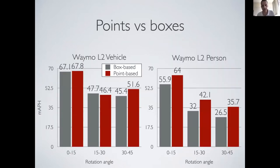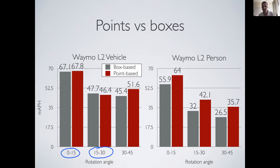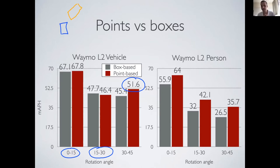In general, this works quite well, especially for objects that don't fit nicely into individual boxes. Comparing a point-based detector versus an off-the-shelf box-based detector on the same backbone: for objects nicely aligned to the ego vehicle, not much changes. But where the point-based detector really shines is objects at about a 45-degree angle to the reference frame — for example, when you take a turn. In these instances, the point-based detector works a lot better than standard anchor boxes.